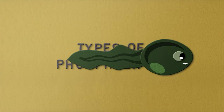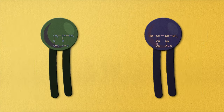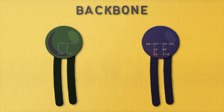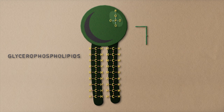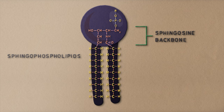Now let's go through the types of phospholipids. There are two main types based on the type of backbone they have: glycerophospholipids, where the backbone is made of glycerol as we talked about earlier, and sphingophospholipids, where the glycerol backbone is replaced by long-chain sphingosine.